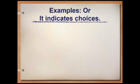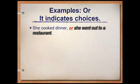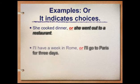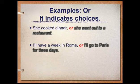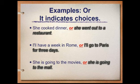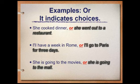The last coordinating conjunction is 'or.' It indicates choices. First example: 'She cooked dinner, or she went out to a restaurant.' Second sentence: 'I'll have a week in Rome, or I'll go to Paris for three days.' Last example: 'She is going to the movies, or she is going to the mall.'